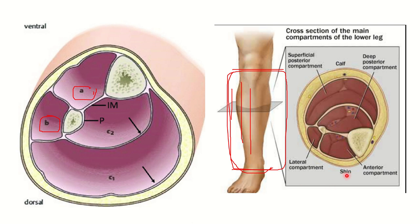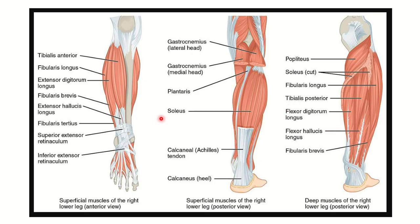This is the shin — the anterior side of the leg. Looking at the different compartments and their muscles: fibularis longus and fibularis brevis, also known as peroneus longus and brevis, are the muscles of the lateral compartment.